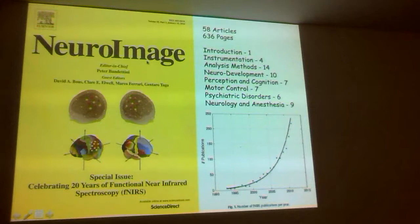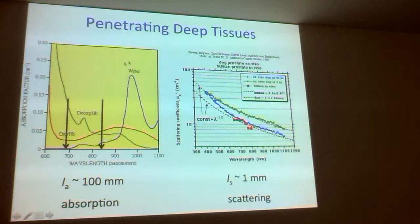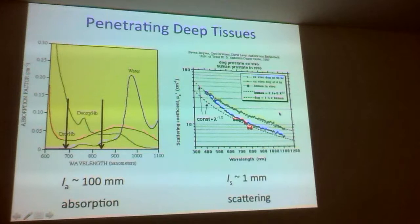So here's the outline. We already discussed that it's because the absorption coefficient is small and the absorption length is long that we're able to penetrate through the scalp and skull and interrogate the hemoglobin concentrations in the brain. But the scattering really confounds us. So that's what we spent the first two hours talking about — how do we deal with the scattering so that we can do a more quantitative analysis of the hemoglobin concentrations?